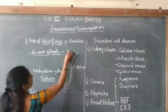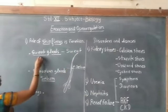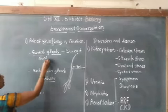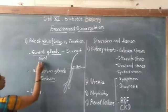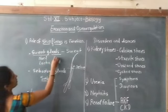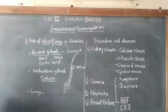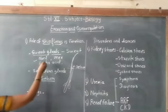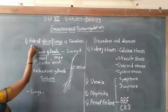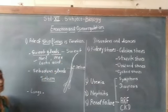Sweat glands secrete sweat. The chemical composition of sweat consists of NaCl, lactic acid, and a small amount of urea. Because of these components excreted by the skin, the skin acts as an accessory excretory organ in addition to the kidney.